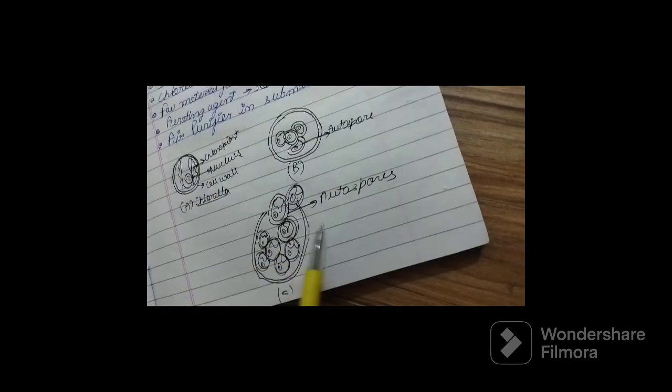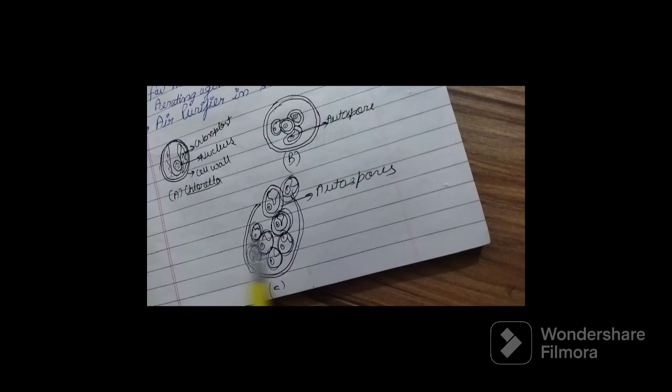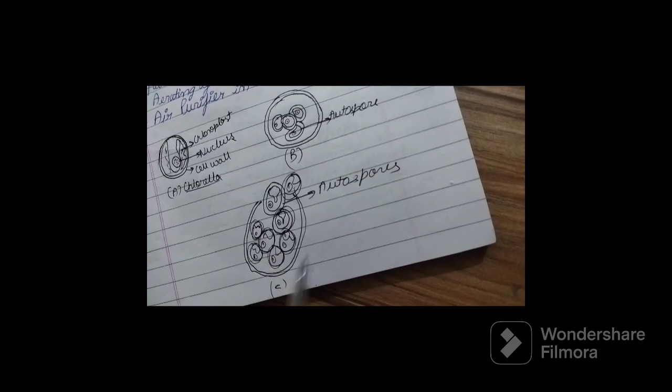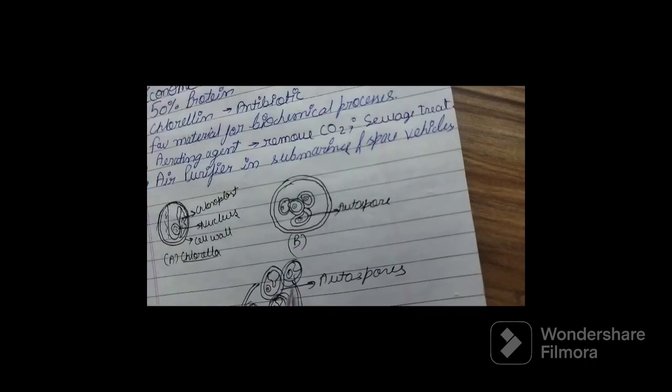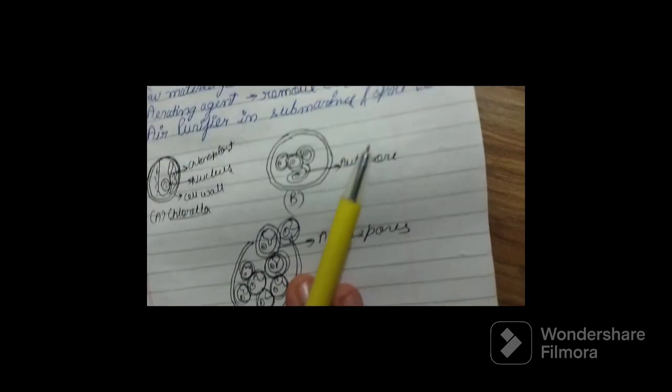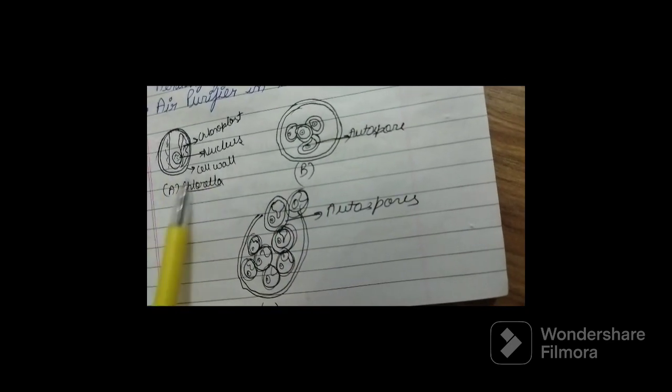This diagram here shows the liberation of the autospores from the parent cell. They then liberate and further grow into a complete organism.